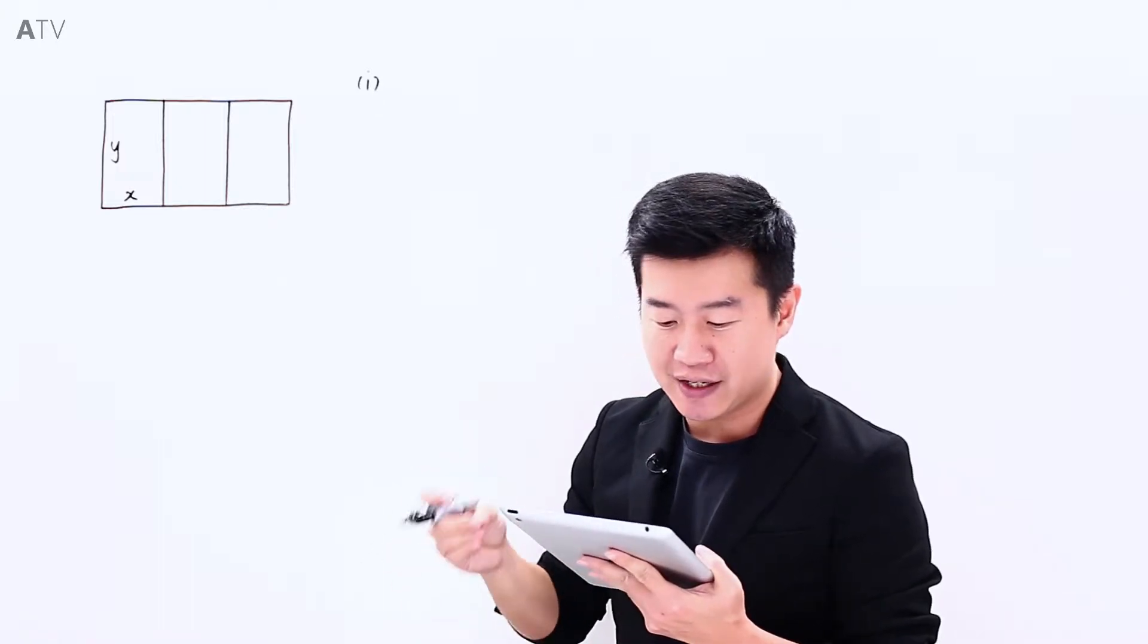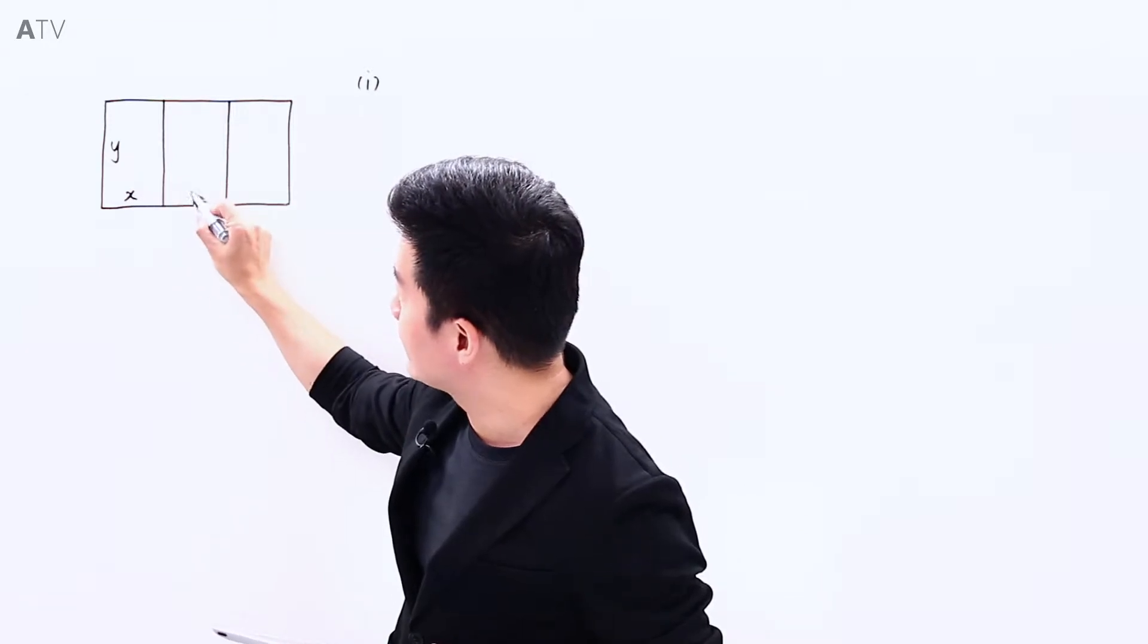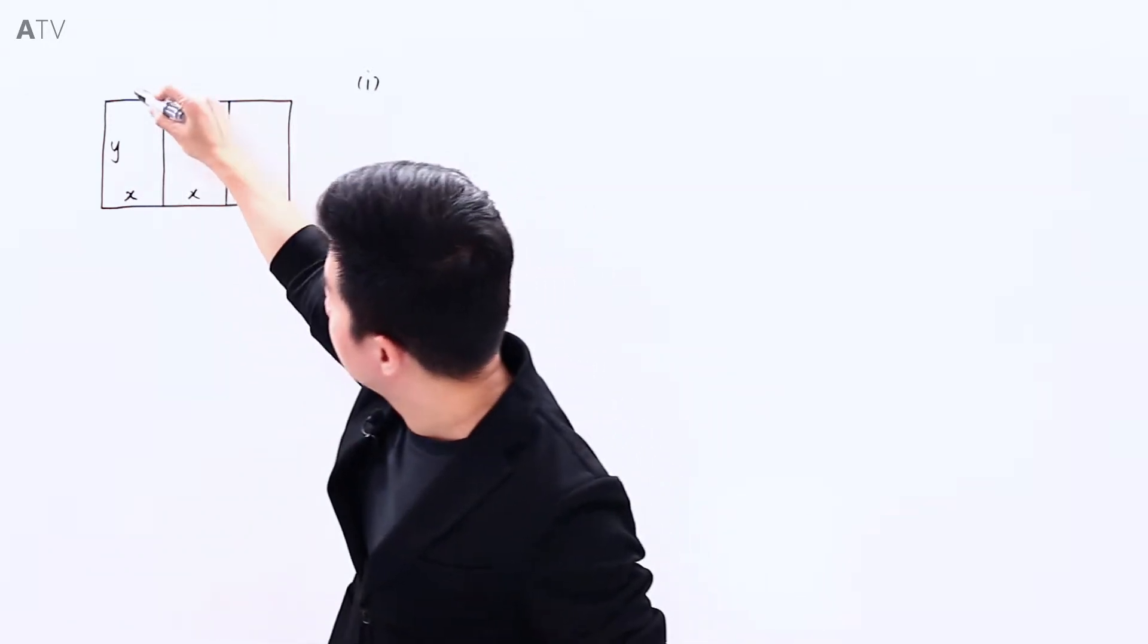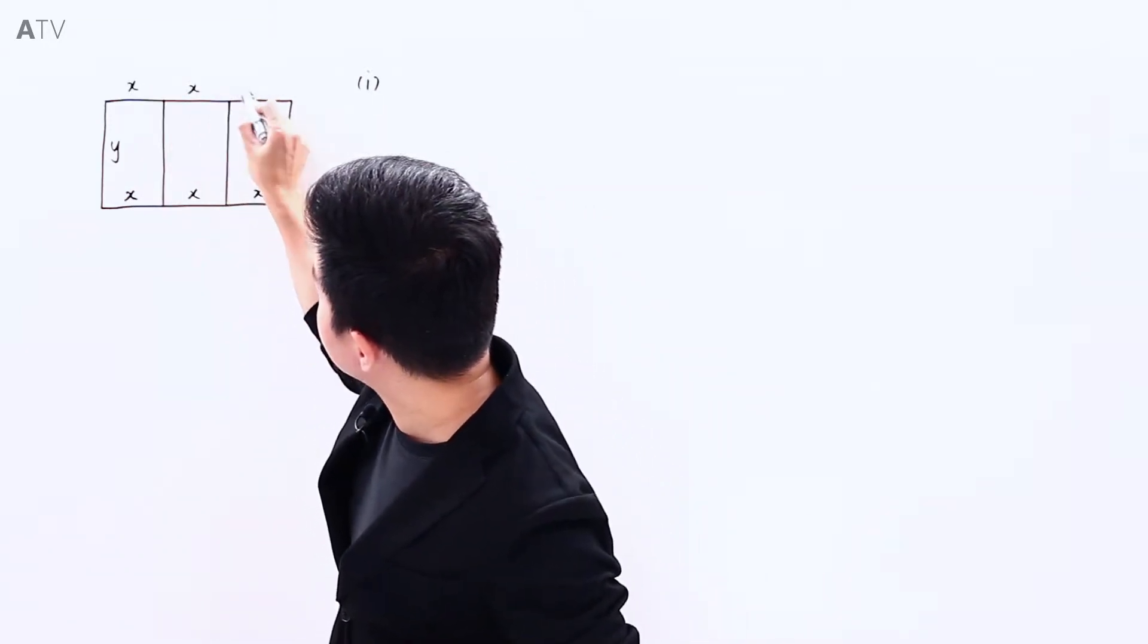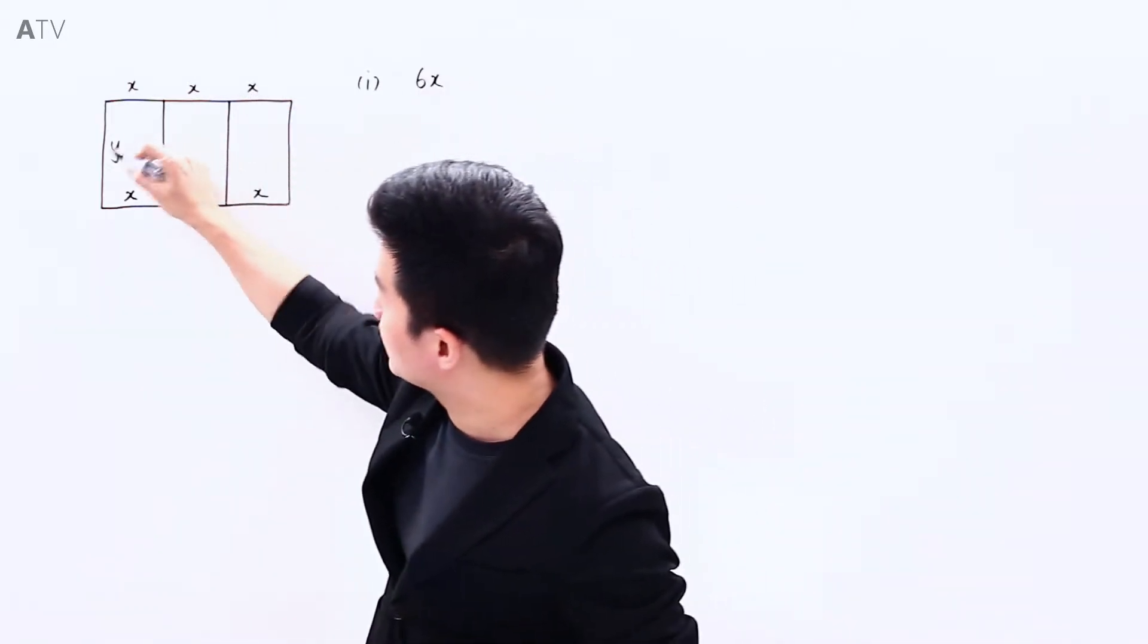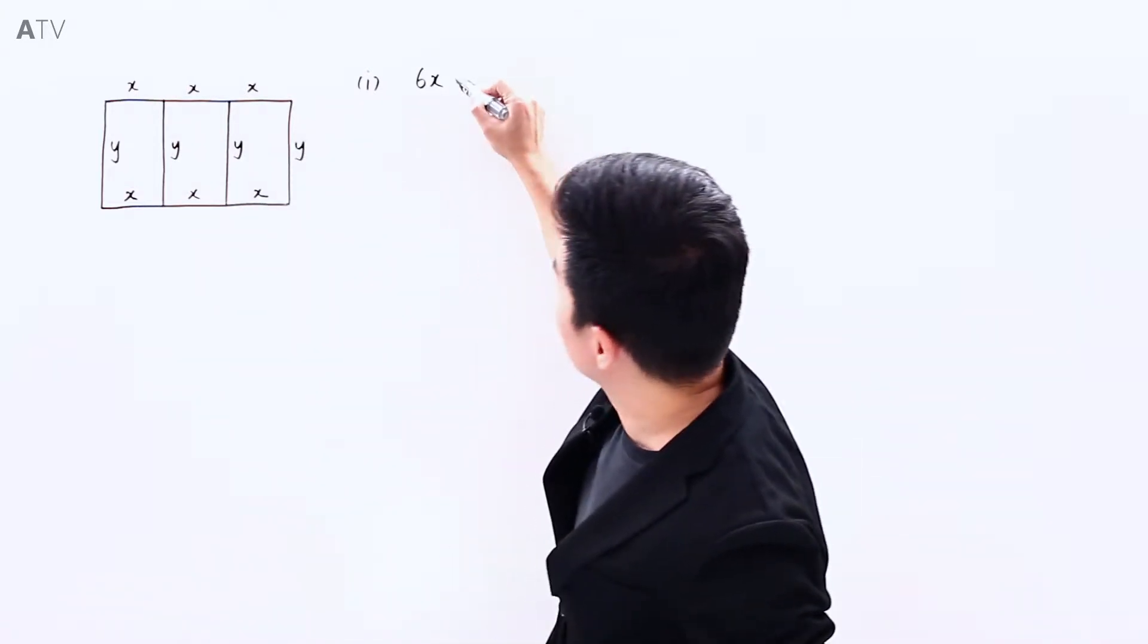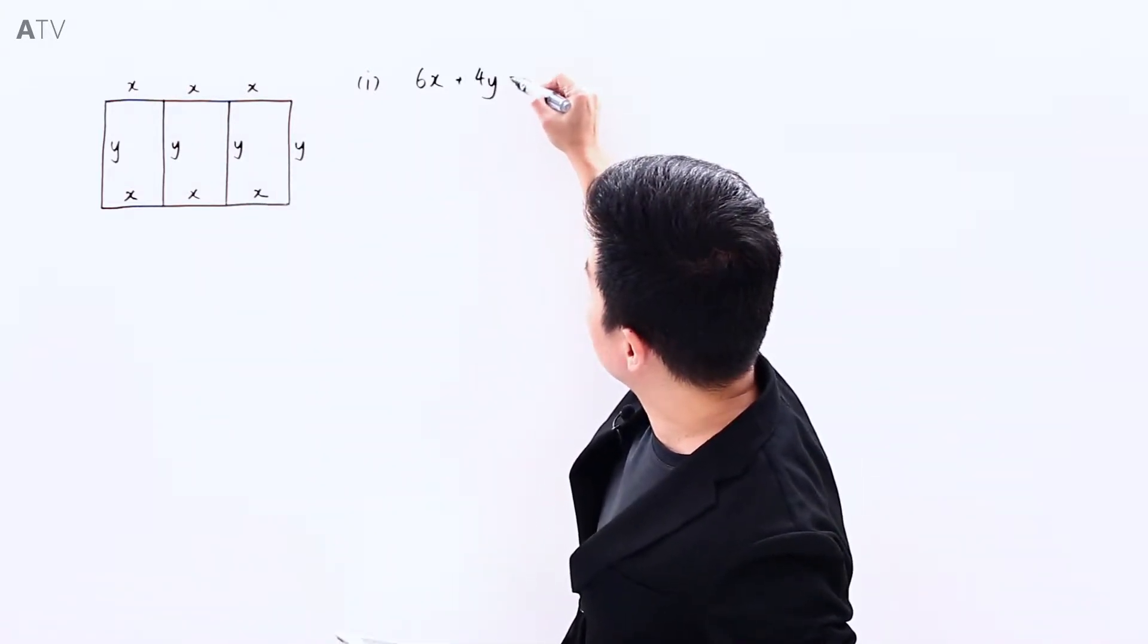We are given that the total length of the wire netting is 288, which means that we have x here, another x here, another x here, here is also x, x and x. That means we have 6x. And this is y, this is also y, here is y, and here is another y, so we have 4y.